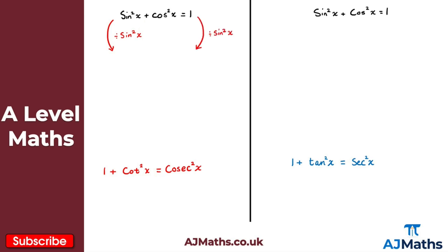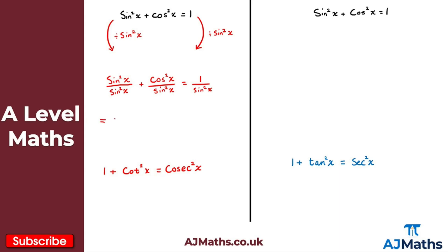Dividing through by sin²x, we get sin²x over sin²x, plus cos²x over sin²x, equals 1 over sin²x. Simplifying, sin²x over sin²x gives us 1.